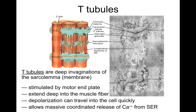The T-tubules are deep invaginations of the sarcolemma — the membrane of the muscle fiber — that penetrate deep into the cell. When the T-tubules are stimulated by the motor end plate, the action potential travels down the motor neuron, gets to the end plate, stimulates the sarcolemma and T-tubules, and is then conducted down the T-tubules deep into the muscle fiber. This allows a massive, coordinated release of calcium from the sarcoplasmic reticulum.